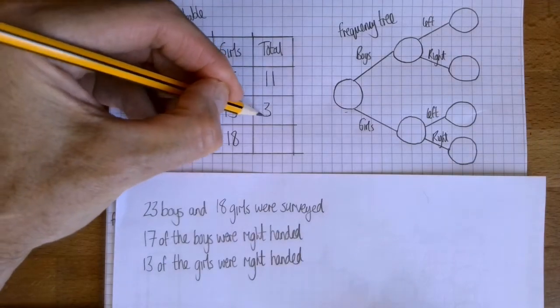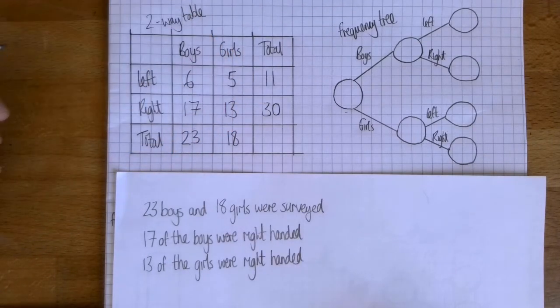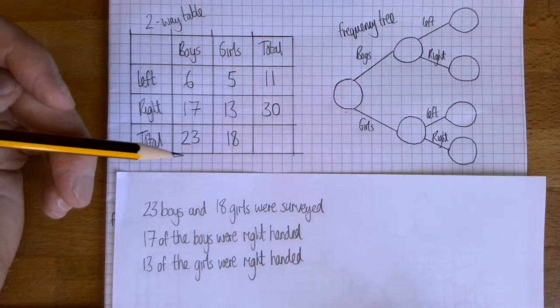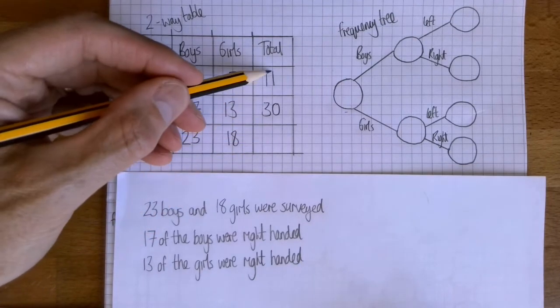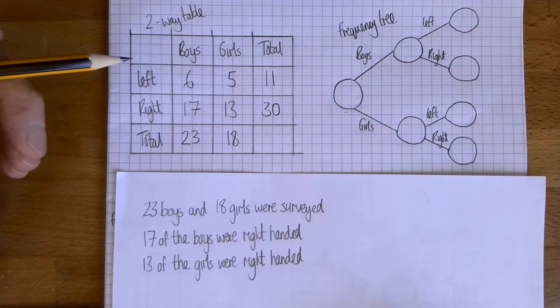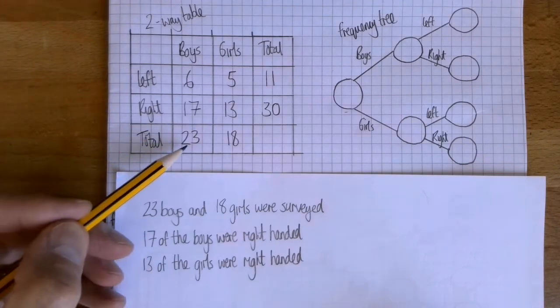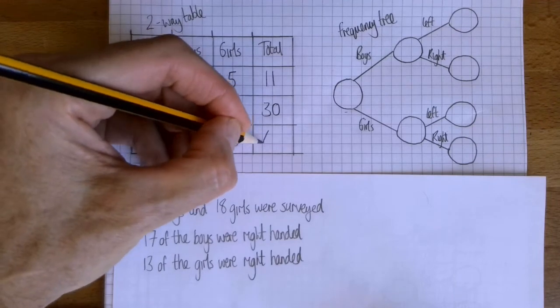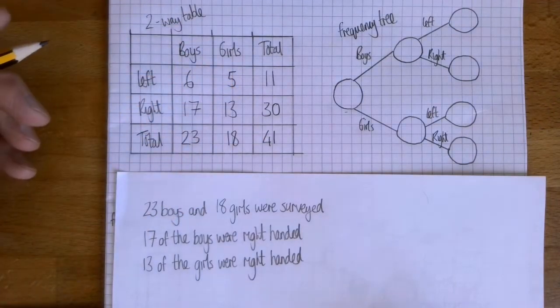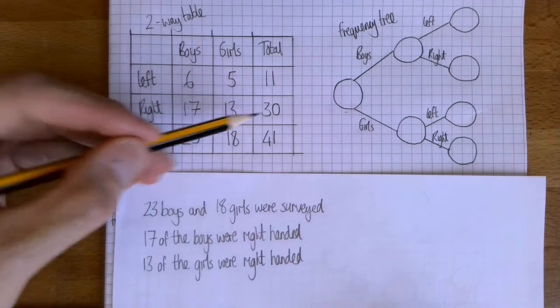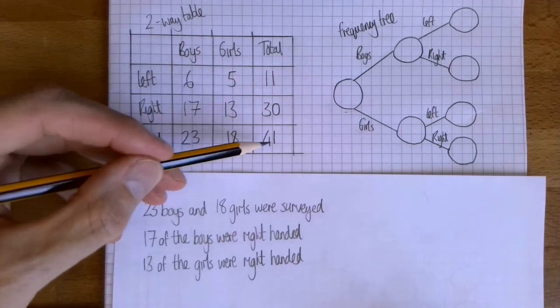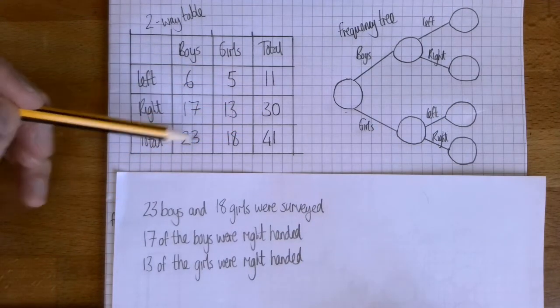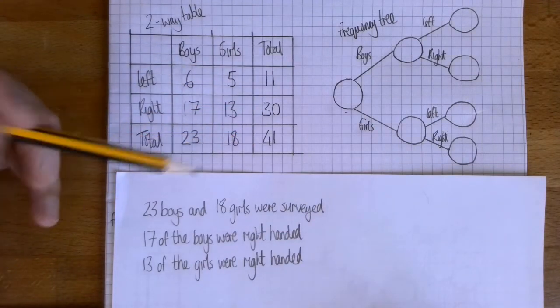This box is a really important box—this is where your grand total goes. You can work out the number in there in two ways: you can either add up all the left-handed people and all the right-handed people, or you can add up all the boys and the girls. We should get the same answer and we do. In this case it's 41. What you mustn't do is add up that number, that number, that number and that number giving you 82.